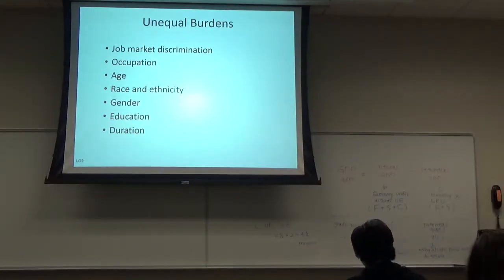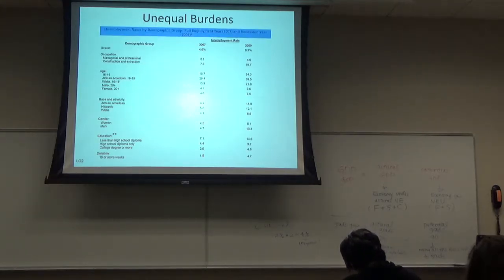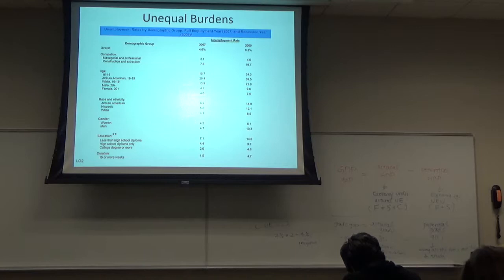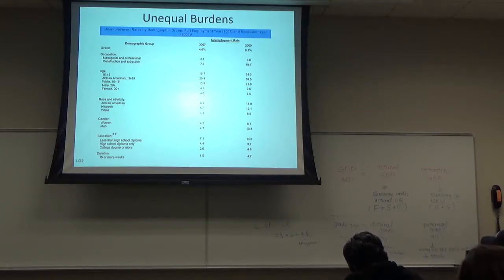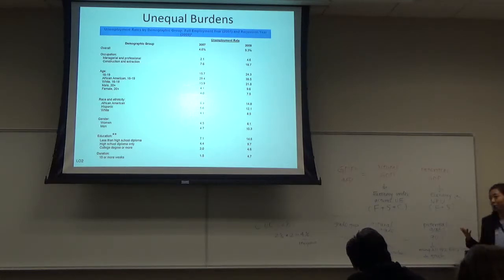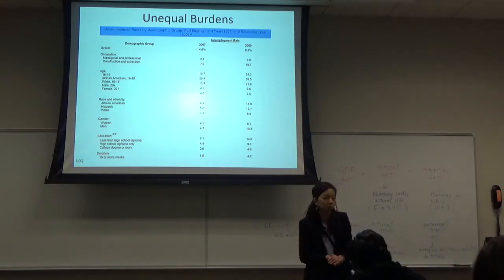When you have unemployment, the unemployment rate of teenagers is typically higher than adult workers, and it also differs by race, ethnicity, and gender. You might jump to a conclusion and say there's discrimination against minorities. But when doing research, it's very important to control for many factors — race, ethnicity, but also education and experience. When running a regression, you need to put in all kinds of variables to control for these factors.